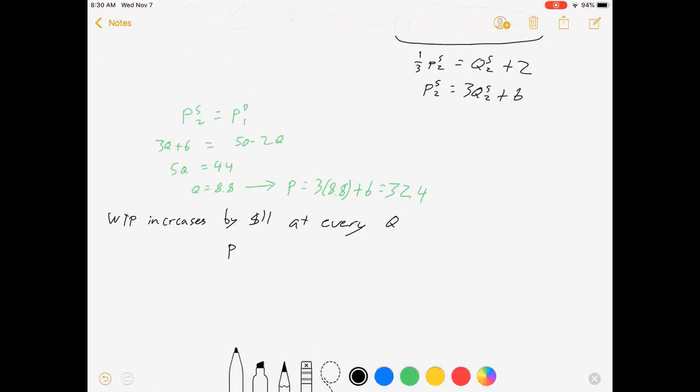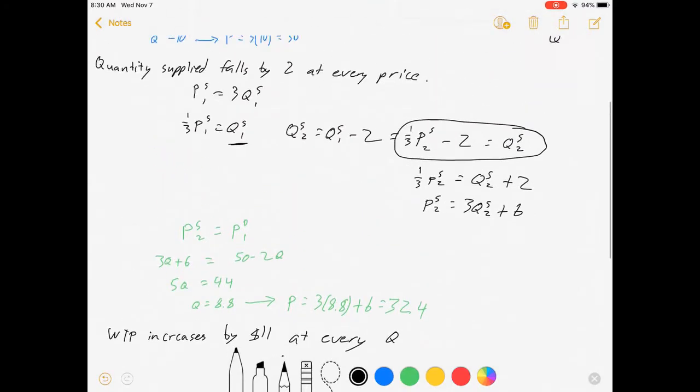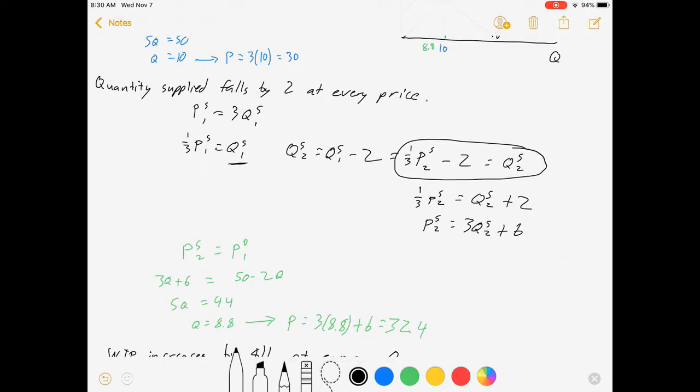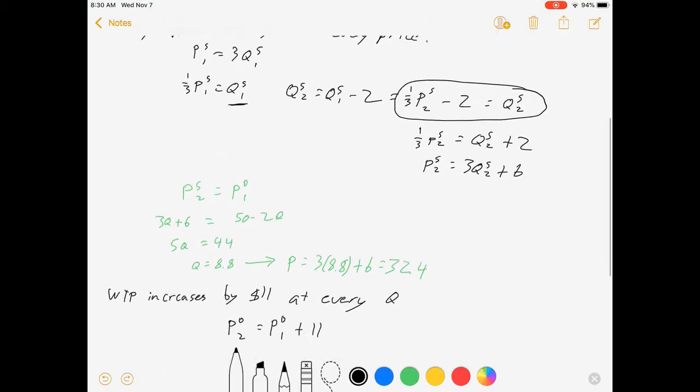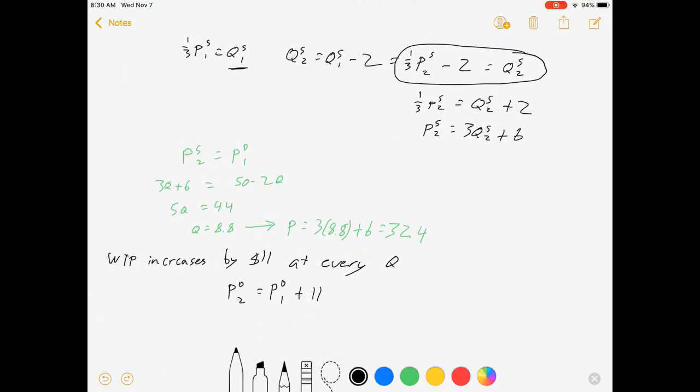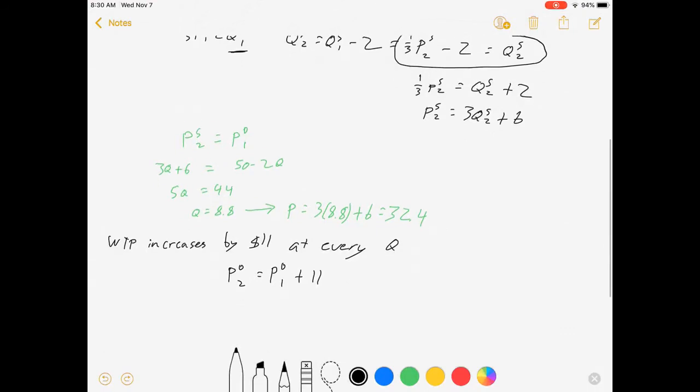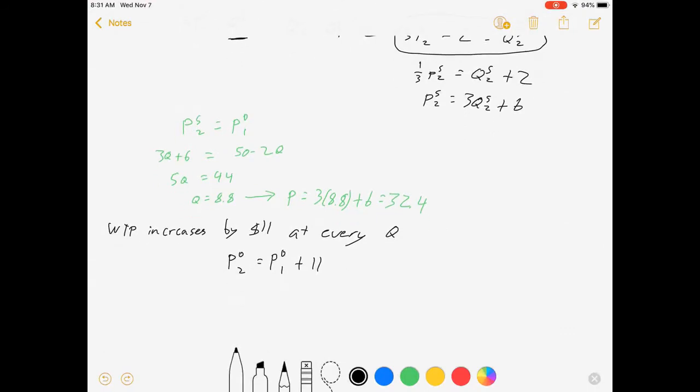So what's that going to look like? That's going to look like our new inverse demand curve, PD2, equals PD1 plus 11. Notice, when I specified my change in a curve by quantity, I wanted to deal with the actual supply curve, which is measured in quantity, and I shifted it by quantity. In this case, I'm changing the price of each quantity, and so I'm going to deal with the inverse demand curve, which is measured in prices. Prices as a function of quantities.